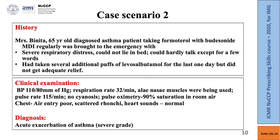Case Scenario 2: Mrs. Binita, a 65-year-old diagnosed asthmatic, has been taking formoterol with budesonide MDI regularly but is brought to the emergency with severe respiratory distress. She could not lie in bed and could hardly speak more than a few words. She had taken several additional puffs of levosalbutamol over the last day without relief. On examination: BP 110/80 mmHg, respiration rate 32/min, accessory muscles of respiration in use, pulse rate 150 (tachycardia), no central cyanosis, pulse oximetry 90% saturation on room air. Chest auscultation showed poor air entry, scattered rhonchi, normal heart sounds. Provisional diagnosis: acute exacerbation of asthma, severe grade.